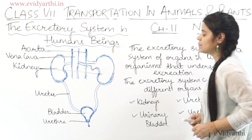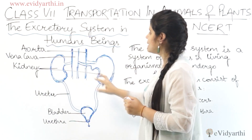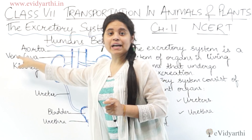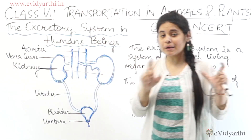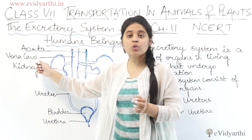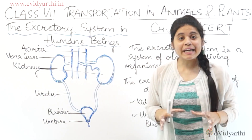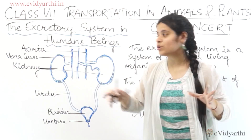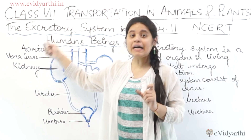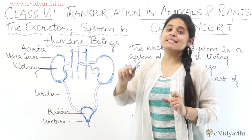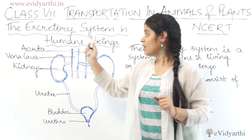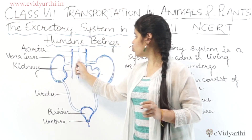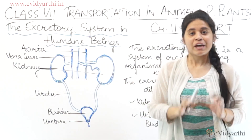We start with a diagram here. In the diagram you can see one is the aorta and one is the vena cava. The aorta is the biggest artery in our body, and the vena cava is our body's biggest vein.